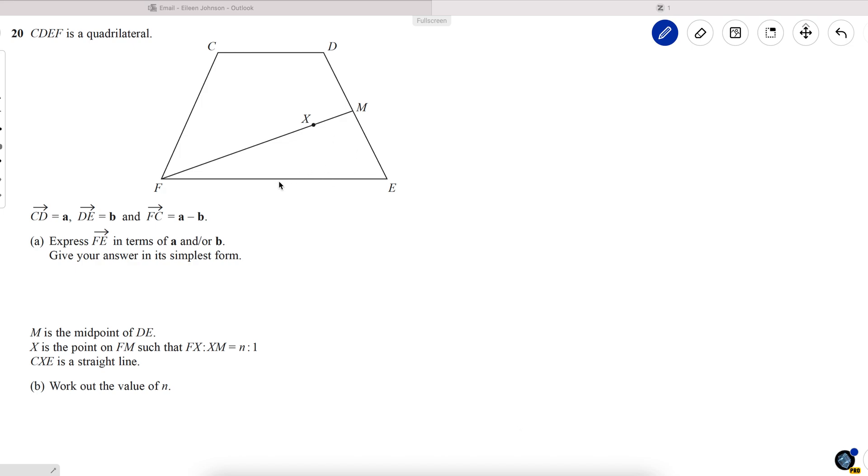Okay, the first thing to do with a vectors question is to mark on the key points. C, D equals A. And the direction matters, so it's important to mark on the arrow C to D. D to E equals B. F to C equals A minus B.